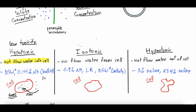Another hypotonic fluid is 0.45% half-normal saline. Normal saline has 154 milliequivalents of sodium and chloride, so half-normal saline has about 75 milliequivalents. Since the body runs around 135–145, the tonicity of half-normal saline is less than the body. So with a hypotonic IV fluid, fluid will travel from the extracellular space into the cell.